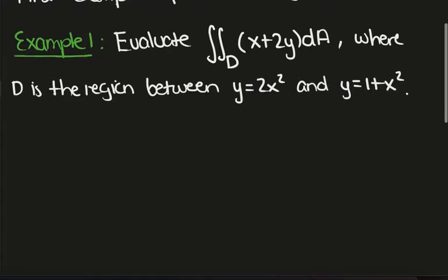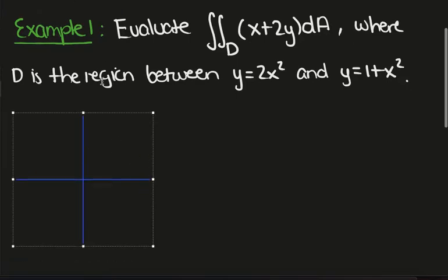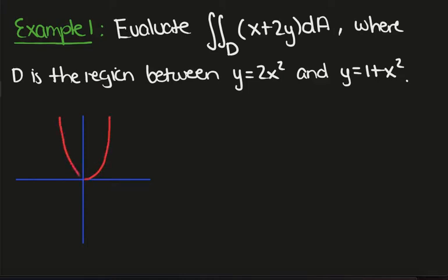The first step is to always sketch the region of integration. So let's draw an axis here and the parabolas we're going to need to draw are firstly 2x squared, which roughly looks like this, and 1 plus x squared looks like this.